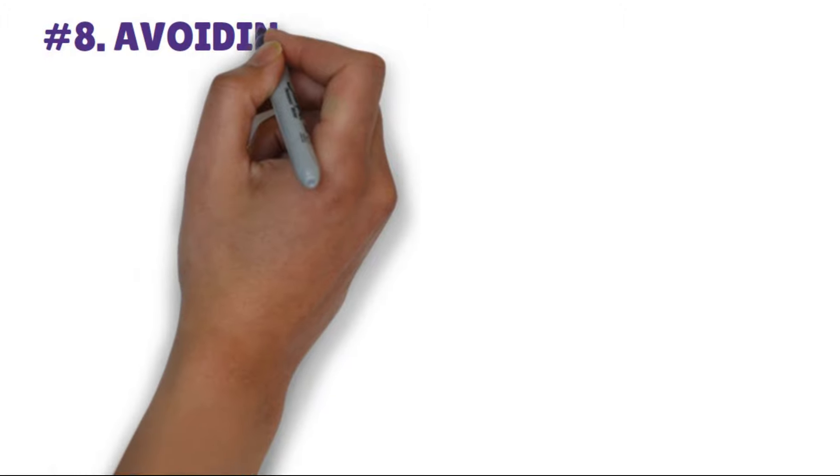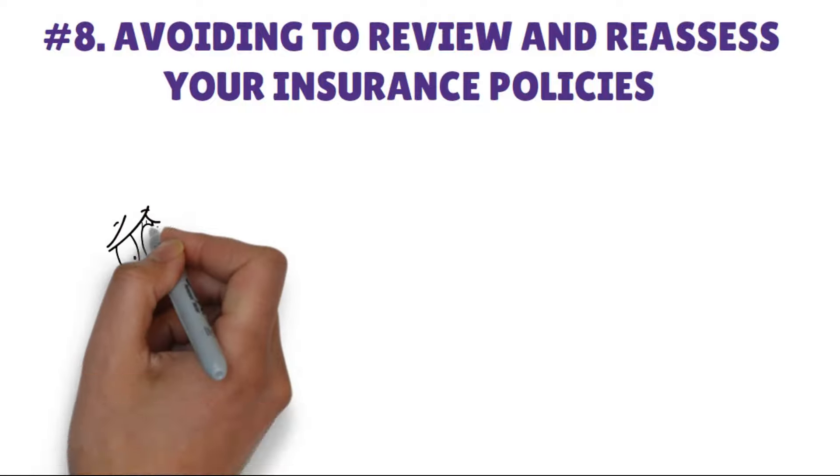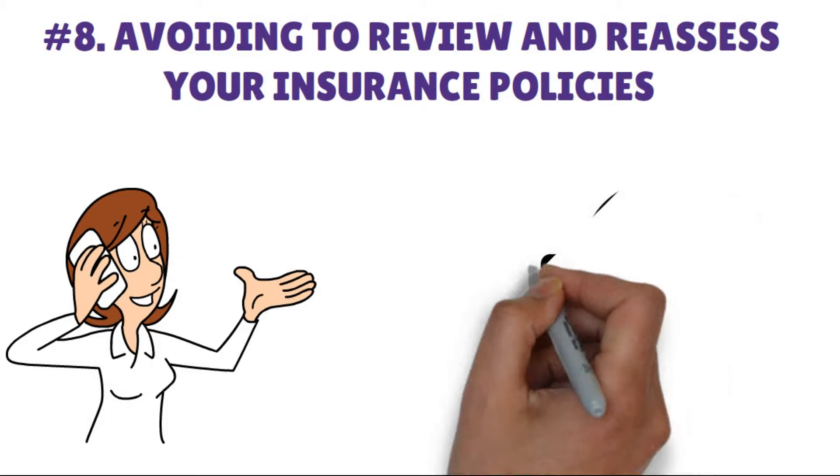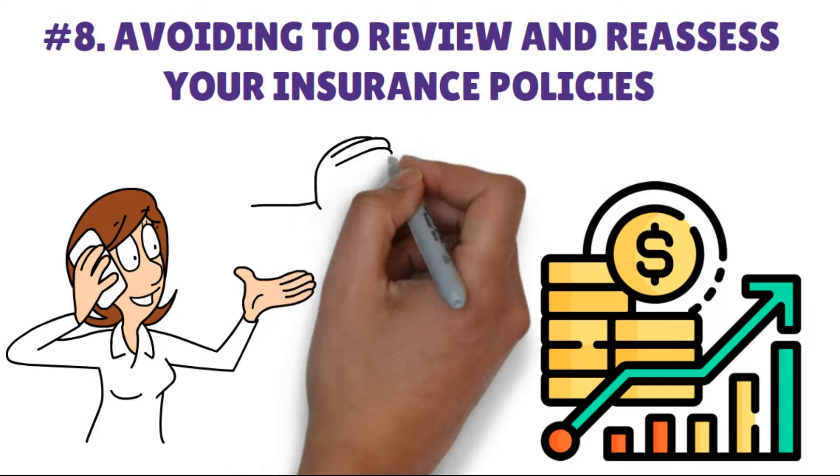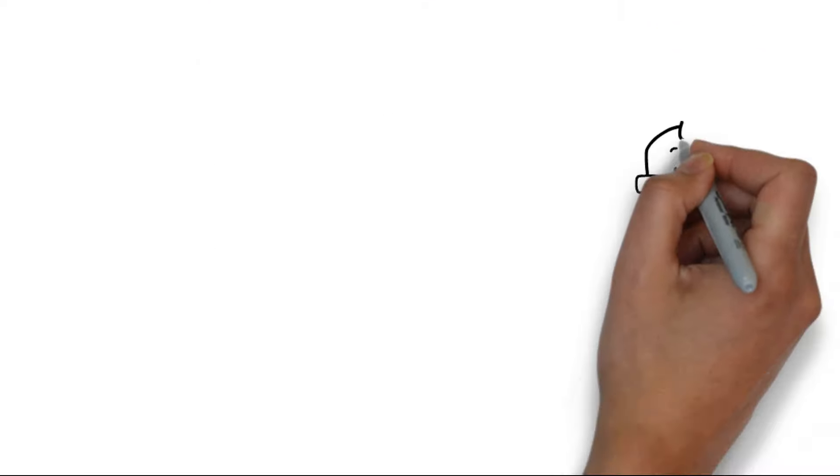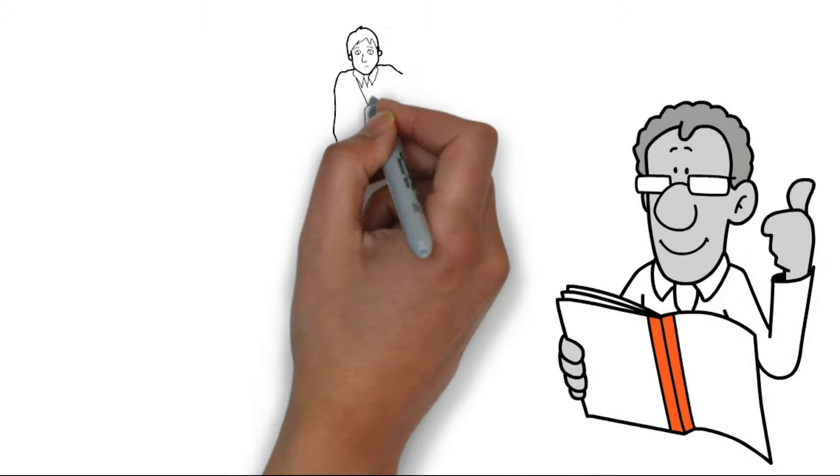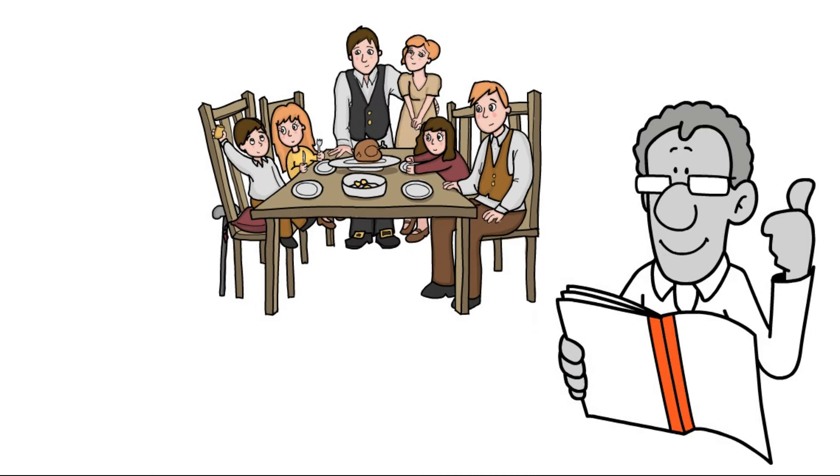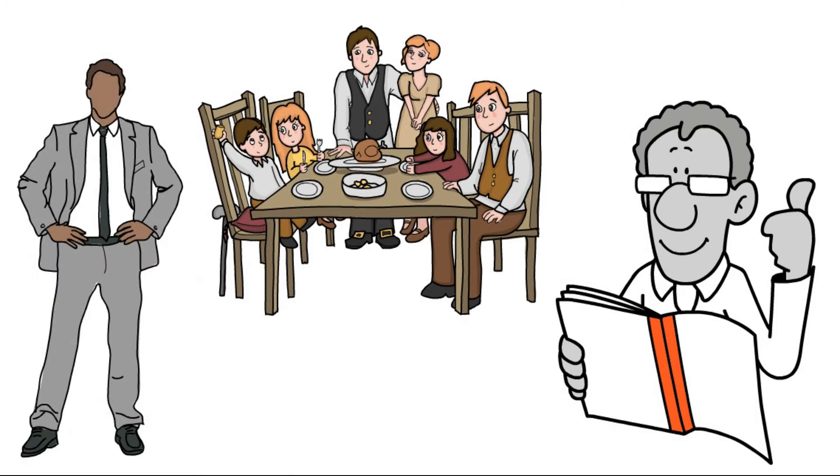Number 8. Avoiding to review and reassess your insurance policies. It's important to reassess your homeowner's and life insurance policies as your needs change over time. It's important to note that inflation has a direct impact on the value of your possessions, while expenses have also seen an increase. Take a close look at your current policies to ensure they adequately protect the value of your personal belongings and provide sufficient financial support for your family's needs. It might be worth considering long-term care insurance as you age. It is important to consider the costs of extended care in case it becomes necessary.